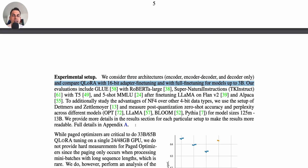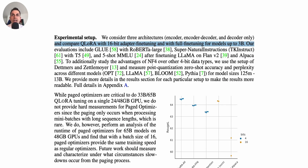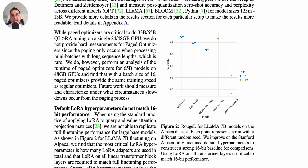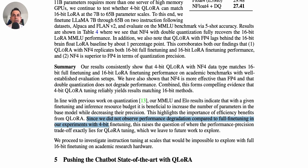The authors compare with various architectures such as RoBERTa, T5, LAMA, Flan V2, Alpaca, and others, measuring accuracy and perplexity across different model sizes from 125 million to 13 billion parameters. The basic takeaway is that 4-bit QLORA with the new data type matches 16-bit full fine-tuning and 16-bit LoRA fine-tuning performance on academic benchmarks. Interestingly, the authors do not observe performance degradation compared to full fine-tuning.